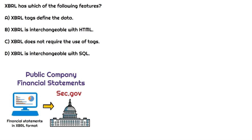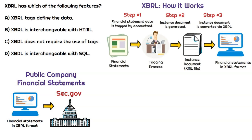If you've ever gone online to a public company's financial statements, say on sec.gov, you'll notice that they have an XBRL formatted financial statement. This is because public companies are required to submit their financial statements in XBRL format so that there's consistency across all financial statements for every company that issues them with the SEC. So let's focus on understanding how it works.